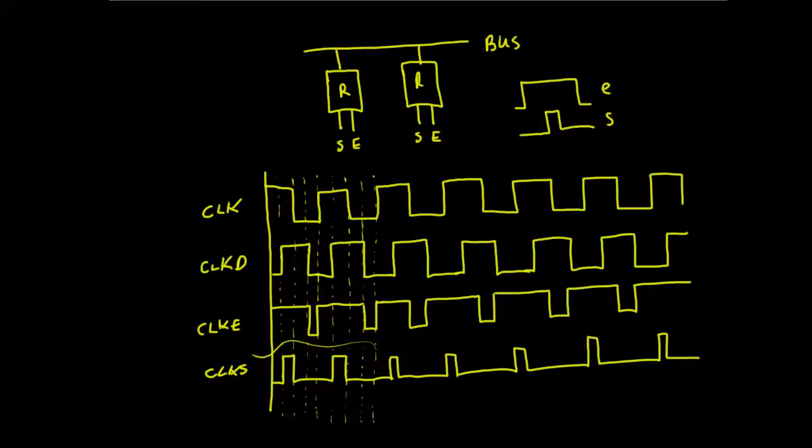Hi there, in this video we're going to go over the clock. Now what we're looking for from a clock, if we look at this little example here, we've got one register here and another register there. So let's say we want to pass the data from this register into this register.